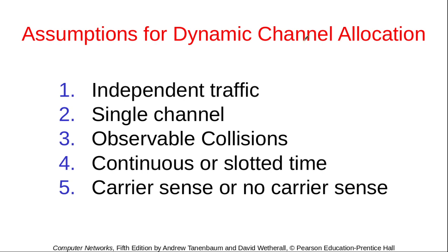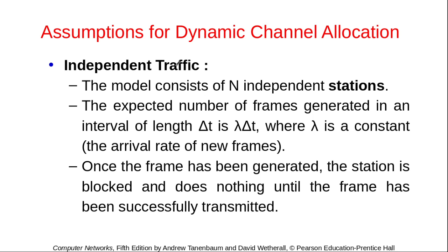Now we'll see the assumptions for dynamic channel allocation. There are five such assumptions. The first assumption is independent traffic: the model consists of n independent stations, each of which can generate and send frames on its own. The expected number of frames generated in an interval of length delta-t is lambda × delta-t, where lambda is a constant arrival rate. Once a frame has been generated, the station becomes blocked and does nothing else until that frame has been transmitted successfully.